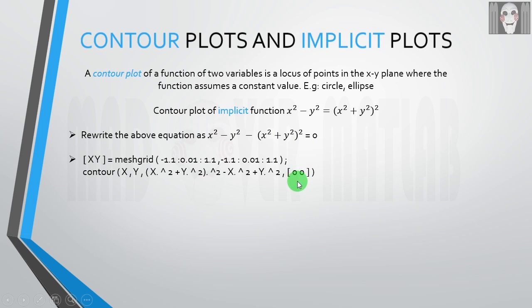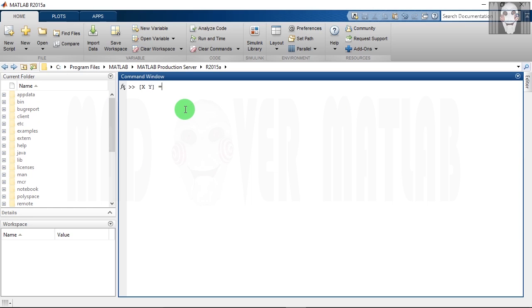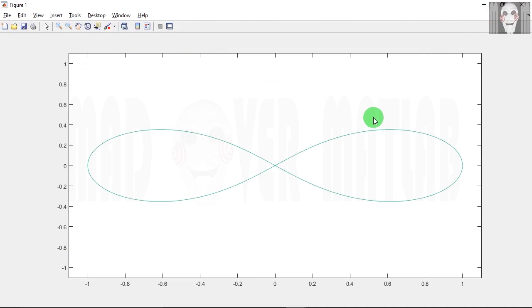Now if I don't set this parameter to 0, I will get more curves, more contours around this lemniscate. So we have got a lemniscate here.